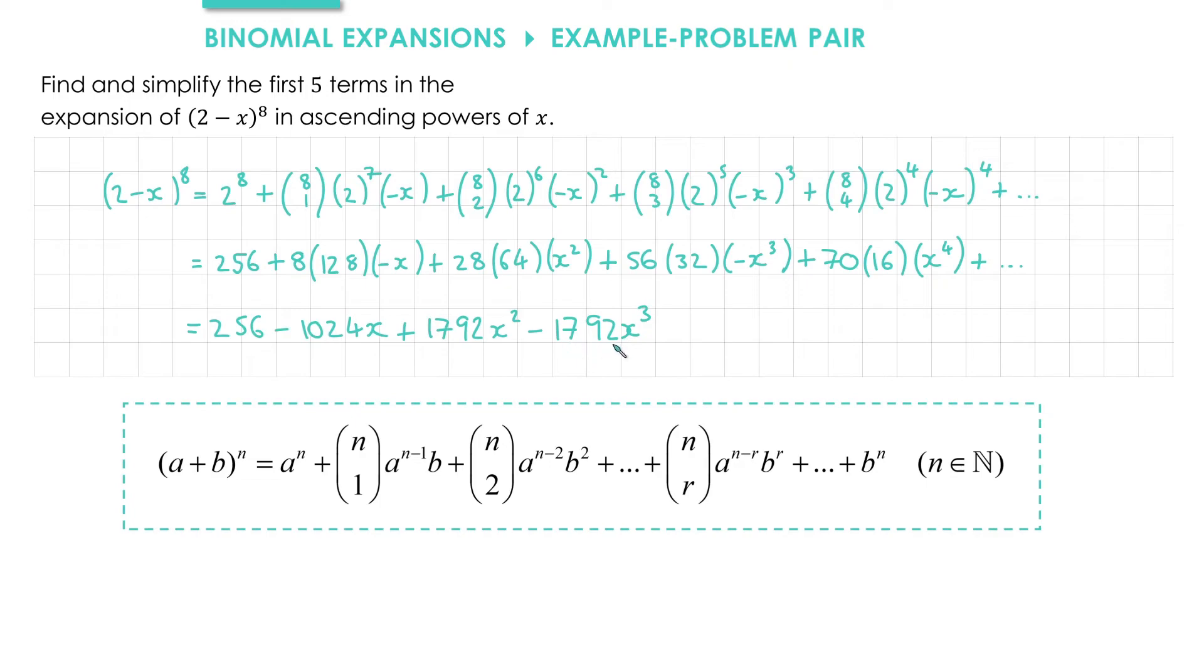I could do this without a calculator here because I've got 28 times 64. Well, 56 is double 28 and 32 is half of 64. So there is a shortcut there.